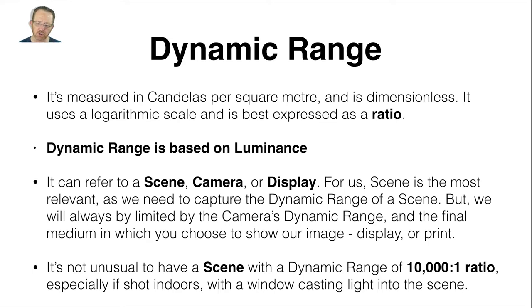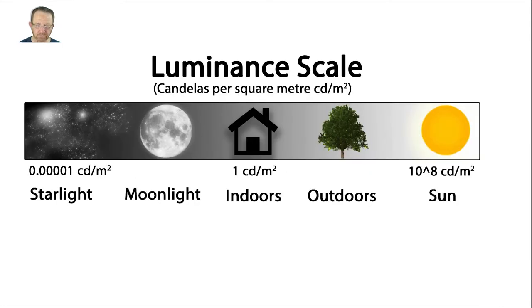It's not unusual to have a scene with a dynamic range of 10,000 to 1 ratio, especially if shot indoors with a window casting light into the scene. So if you need to photograph that window and there's shade to the side, that's a very high dynamic range. This is a luminance scale I knocked up in Photoshop. On the left, starlight is 0.0001 candela per square meter; average light indoors is 1 candela per square meter; and if you were to photograph the sun — which is not advisable — it's 10 to the power of 8 candelas per square meter.